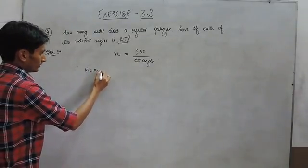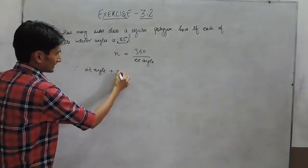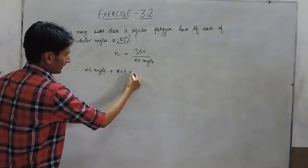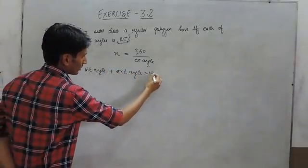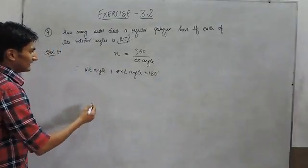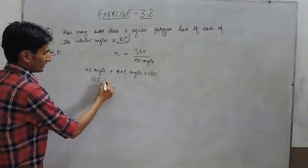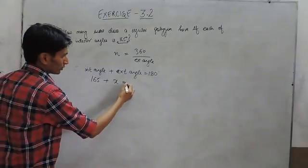If the interior angle is given, we can simply find the exterior angle. Here the interior angle is equal to 165, and if the exterior angle is equal to X,